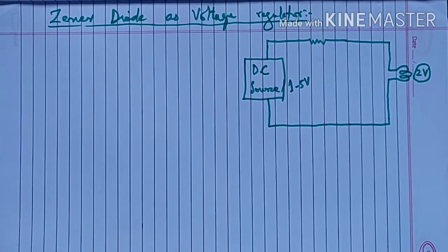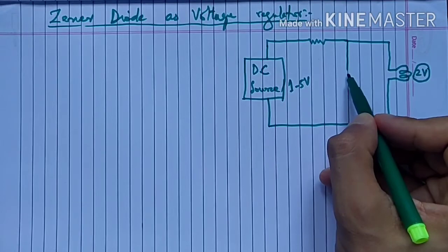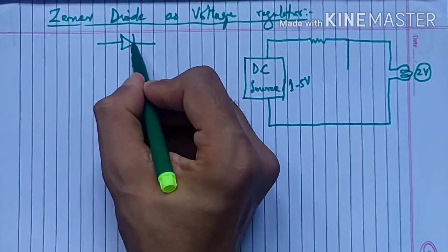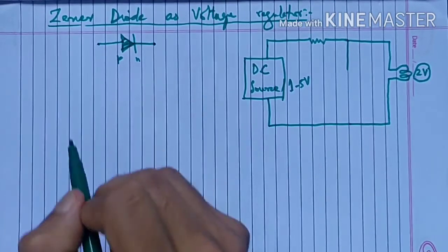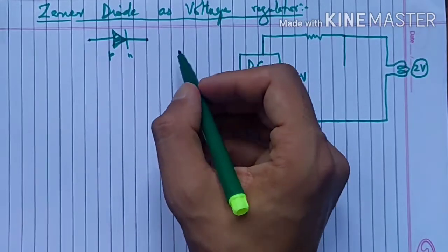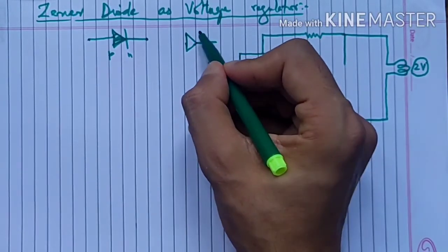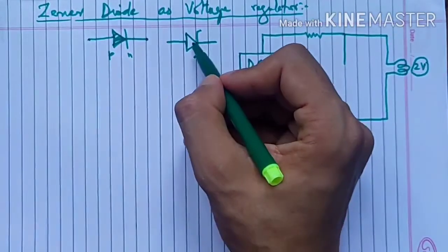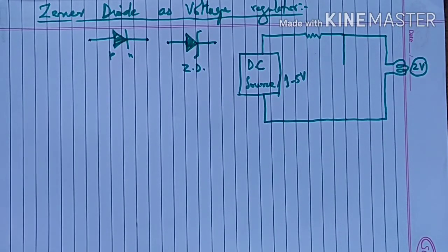इस situation में हम क्या करेंगे - यहाँ पे हम parallel में zener diode लगाते हैं। जो normal diode का symbol होता है like this - these are the two terminals, the triangular region is called as P region and this line segment region is called as N region. This is symbol of a normal PN junction diode. जो zener diode होता है उसका symbol क्या होता है - यह triangular region है that is P region, और यहाँ पे हम ऐसे line segment draw करते हैं, थोड़ा सा Z shape का। This is symbol of zener diode.